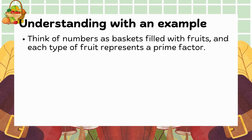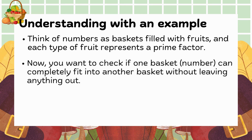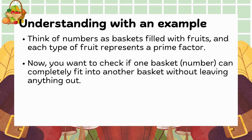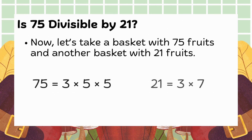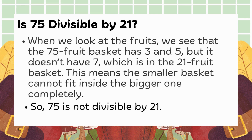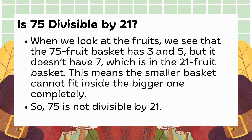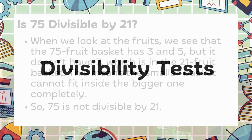Using prime factorization to check if one number is divisible by another: imagine numbers as baskets filled with fruits, where each type of fruit represents a prime factor. To check if one basket can fit into another, you need to see if all the fruits of the smaller basket fit inside the bigger one. For example, is 75 divisible by 21? The 75 fruit basket has 3, 5 and 5, while the 21 fruit basket has 3 and 7. Since the 75 fruit basket does not have 7, it cannot fit completely, so 75 is not divisible by 21.